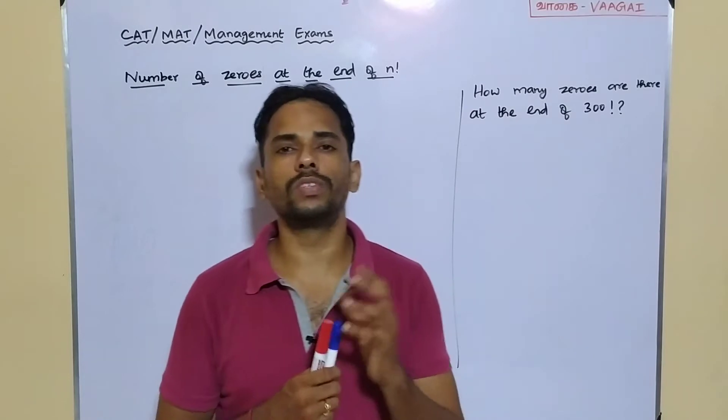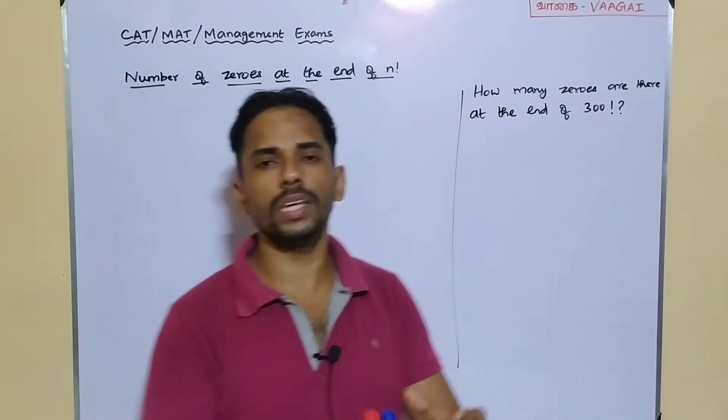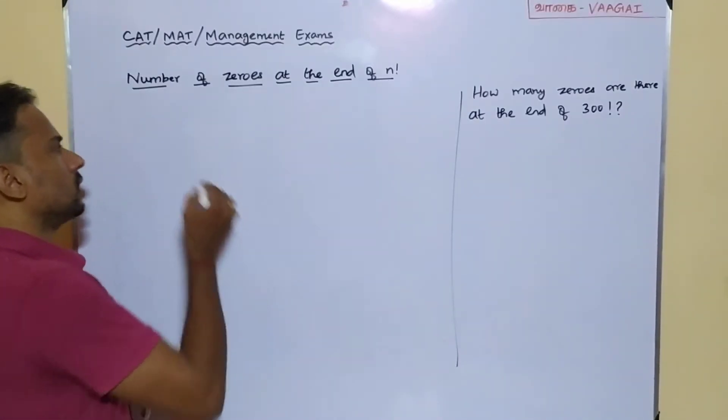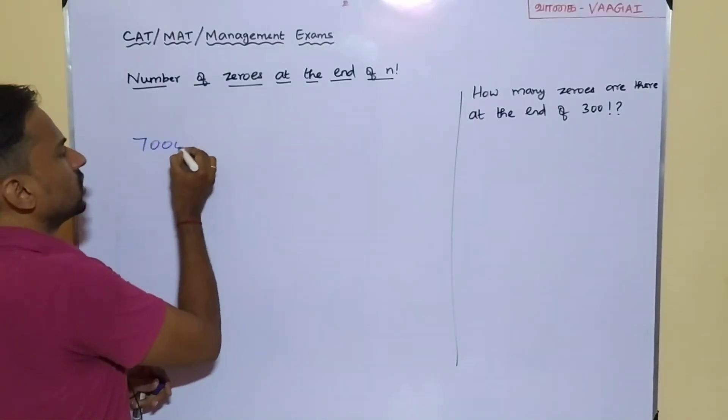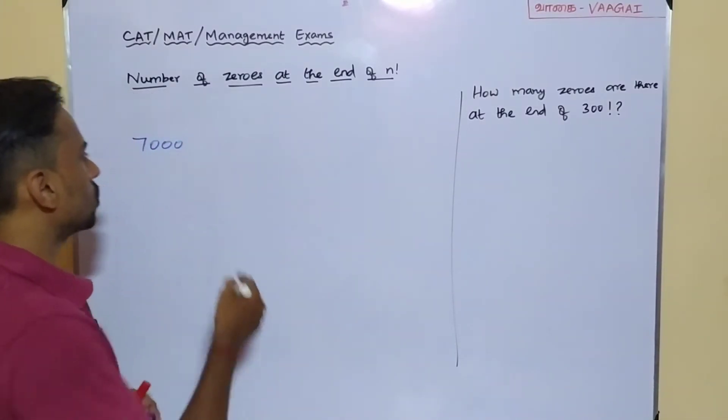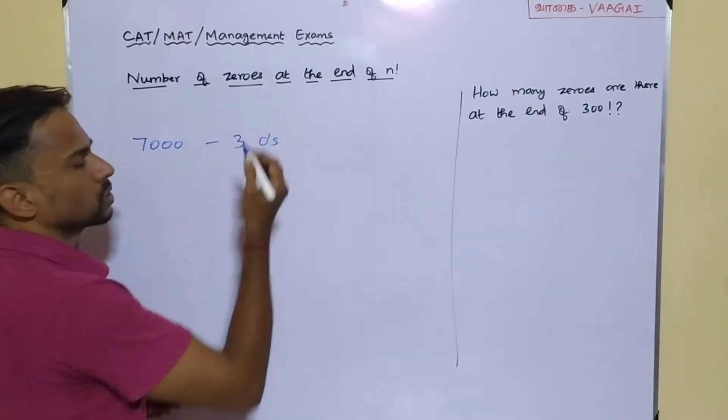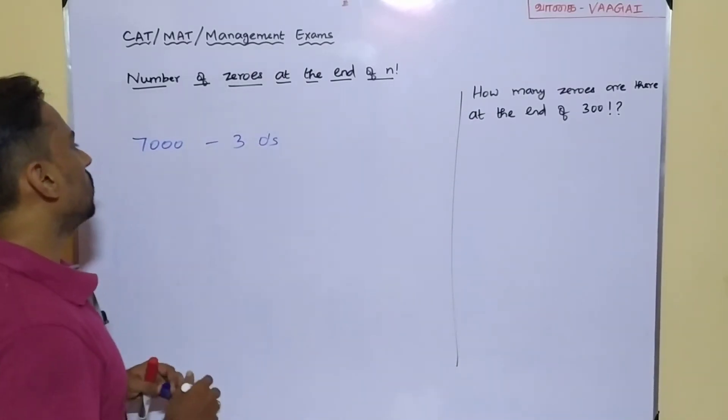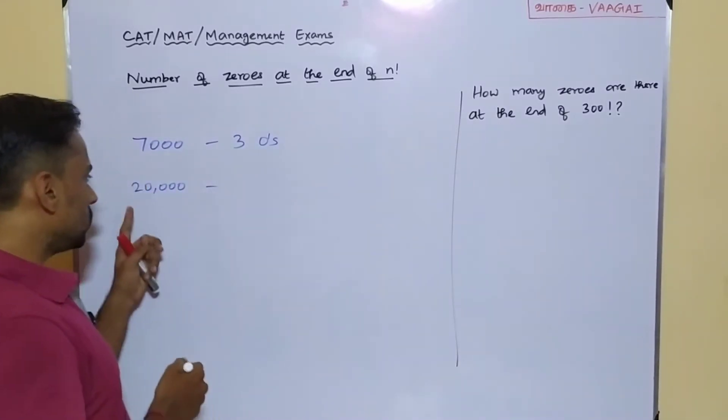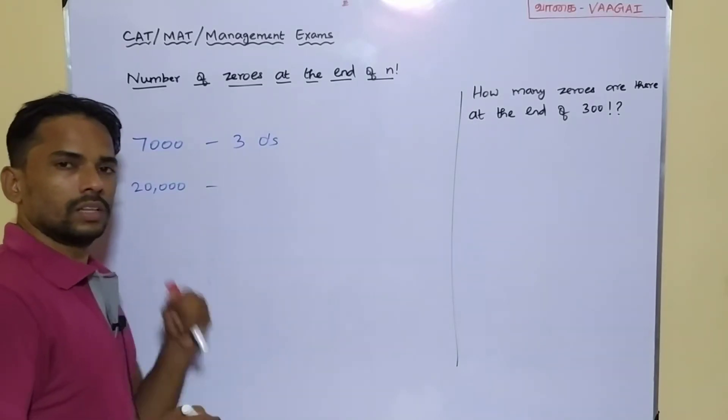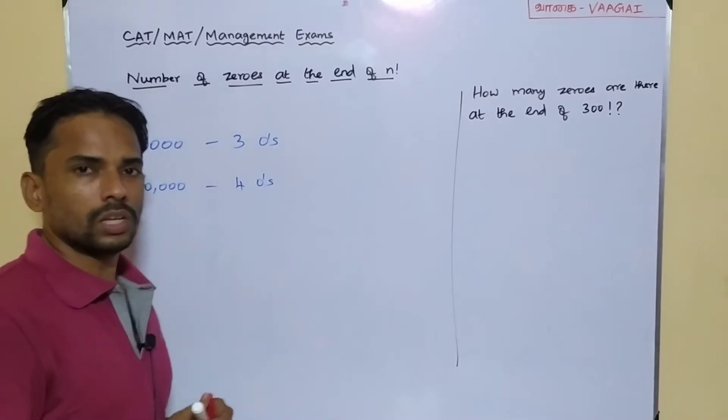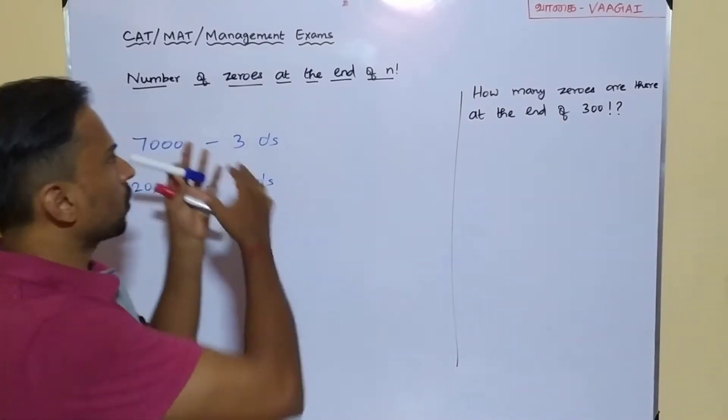Coming to the number of zeros, what do you mean by the number of zeros? We will take some very easy examples for our basic understanding. Suppose I write the number 7000. It is very clear that 7000 is going to end with three zeros. There are three zeros at the end of 7000. If you take the number 20,000, this 20,000 is going to have just count and see how many zeros are there - there are four zeros here.